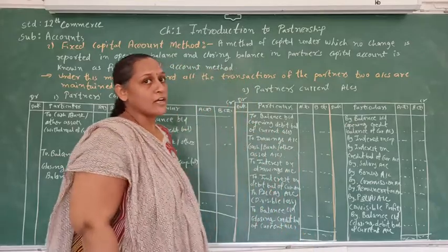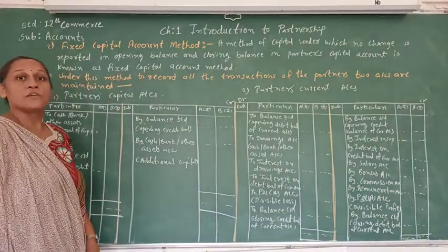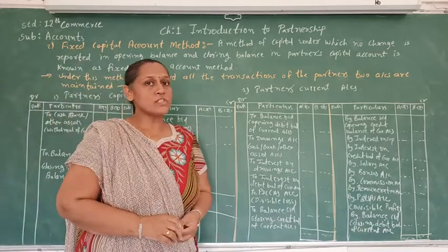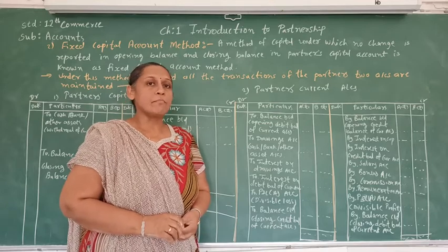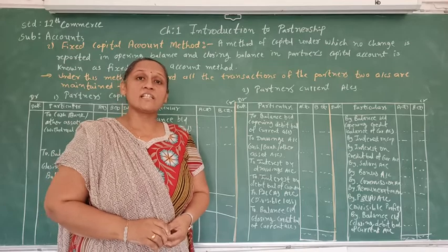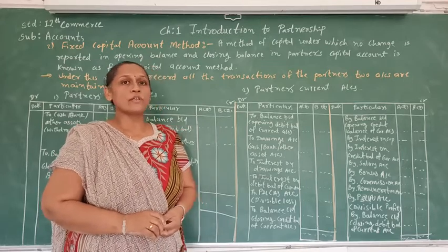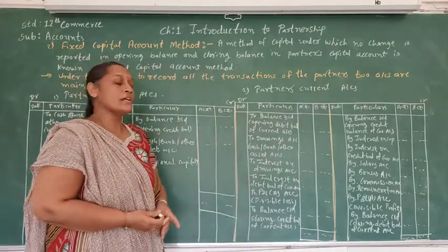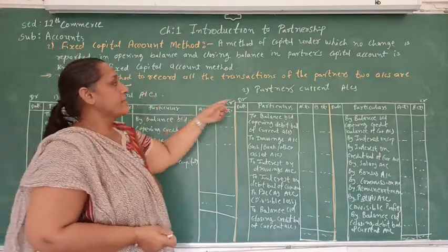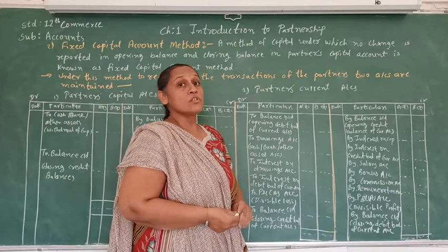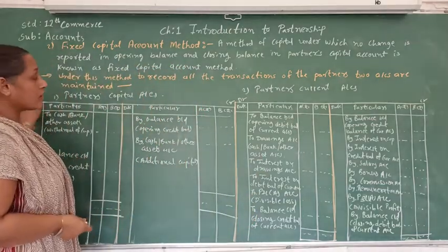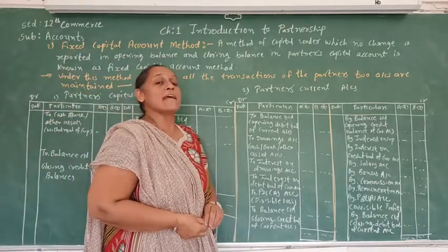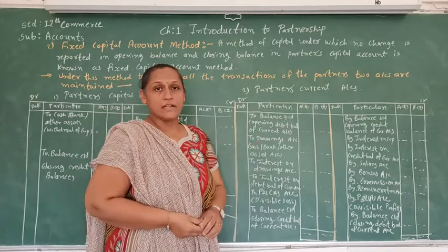The fixed capital account method is a method where the capital of the partners is fixed. That means there is no change in the opening and closing balance of a partner's capital account. So, where do we record the changes during the year? For that, we create another account called the partner's current account. We prepare two accounts: the partner's capital account and the partner's current account. In the partner's capital account, we record changes of capital only, and all other transactions between partners and the firm are recorded in the partner's current account.